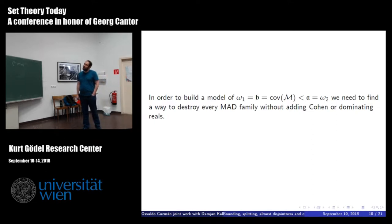So now, if we want to build a model where omega_1 is b equal covering meager less than a, so we need to find a way to destroy every MAD family without adding Cohen reals and without adding dominating reals.